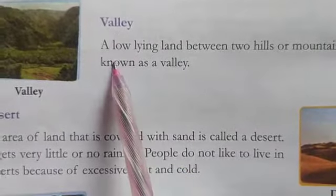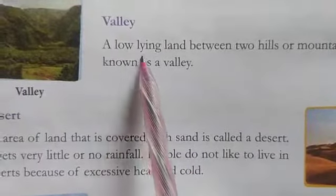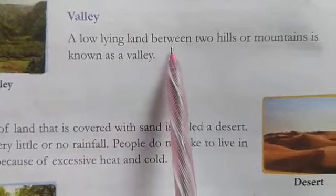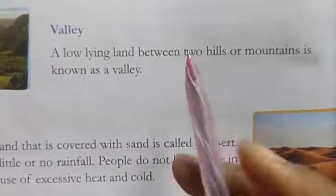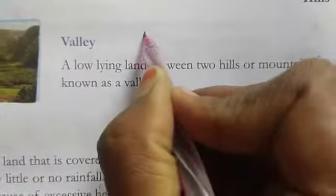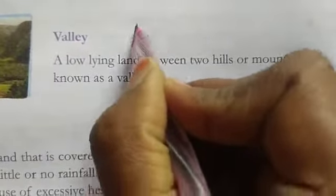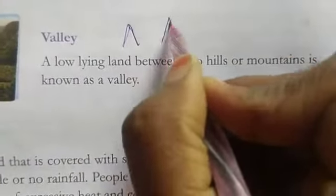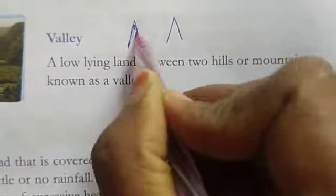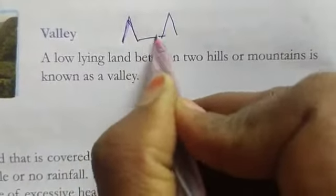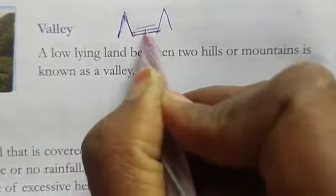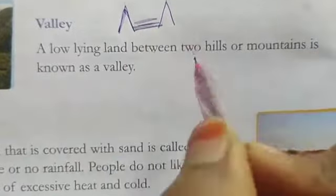About the valley — a valley means a low-lying land between two hills or two mountains.